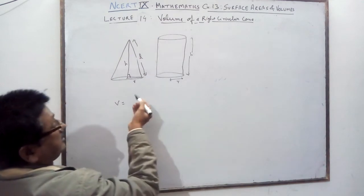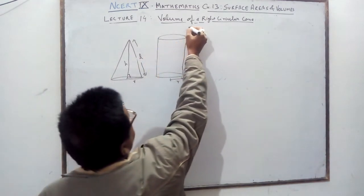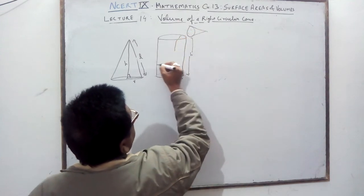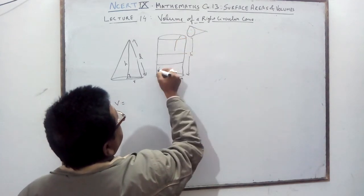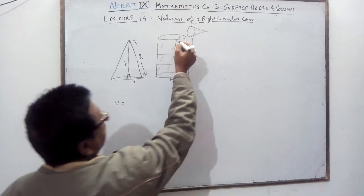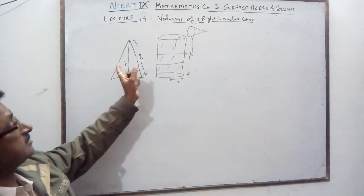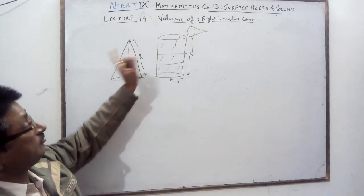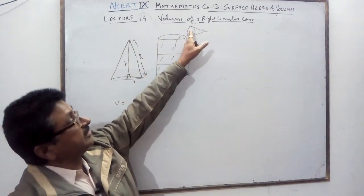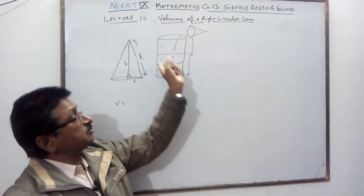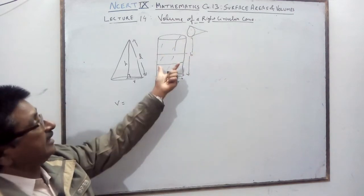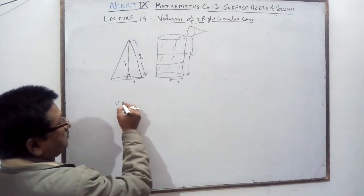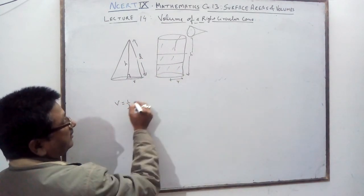If you fill an inverted cone with sand and pour it into a cylinder of the same radius and same height, after doing this three times you get the cylinder completely full. This means the volume of the cone is one third of the volume of the cylinder.